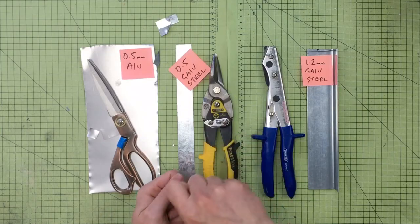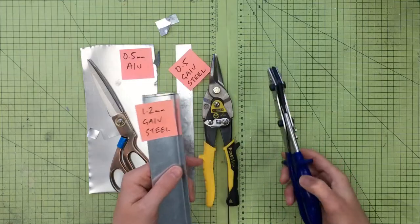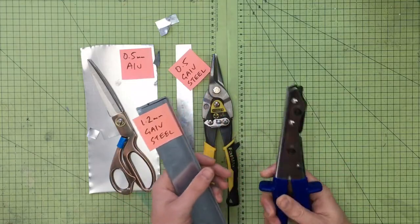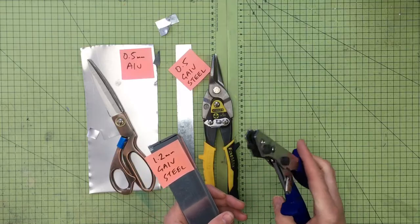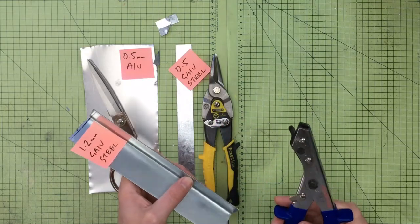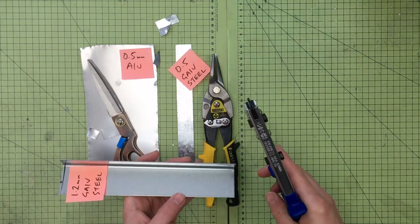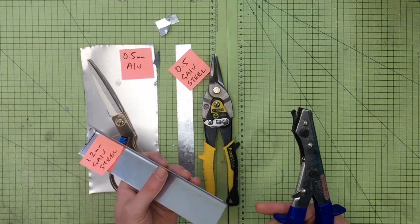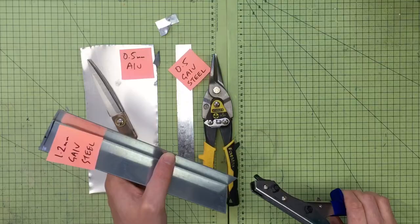So you can get a lot of stuff done with that, and simply just bending, hammering over formers, 90-degree things, or even just putting it in a vice. The next one is 1.2mm galvanized steel. These things are absolute genius and I came across these because I was needing to just trim off a little bit of excess material. At the time I didn't have a grinder.